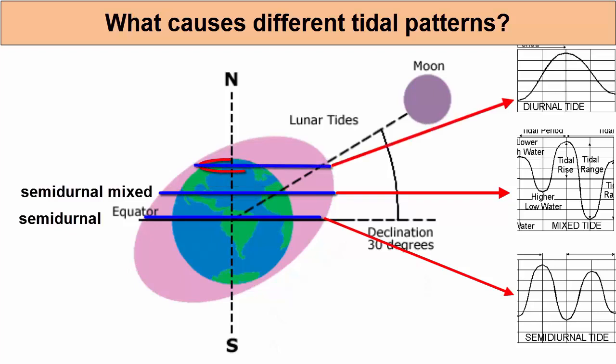At the poles, we miss one bulge entirely, so we rotate through only one bulge per lunar day and experience a diurnal pattern.